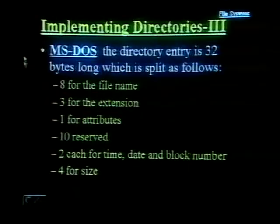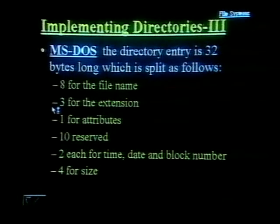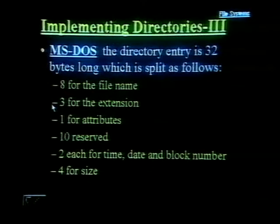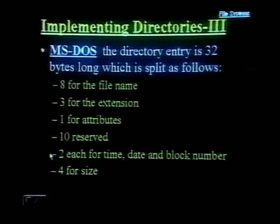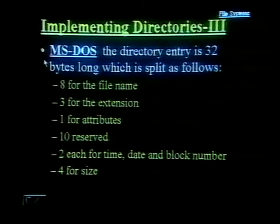Let's see how directories are implemented in the DOS and UNIX environments. In the DOS environment, the directory entry is 32 bytes long, split as follows: the first 8 bytes for the file name, next 3 for the file extension (limited to three characters in DOS), 1 for attributes, 10 reserved, 2 each for time, date, and block numbers, and 4 for the size of the file.